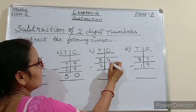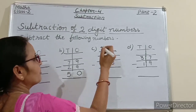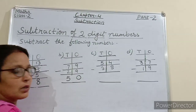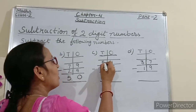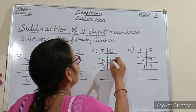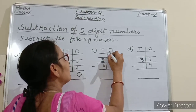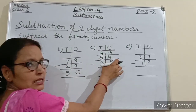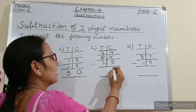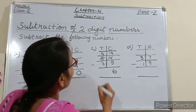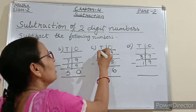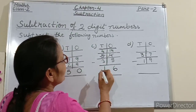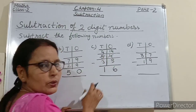Next question: subtract 38 from 54. So is it possible to subtract 8 from 4? No. So again we will borrow from 5 tens. The 4 at the ones place will become 14, and 5 tens will become 4 tens. Now 14 minus 8 is equals to 6 — write 6 under the ones column. And 4 tens minus 3 tens, we will write 1 ten. So 54 minus 38 is equals to 16.